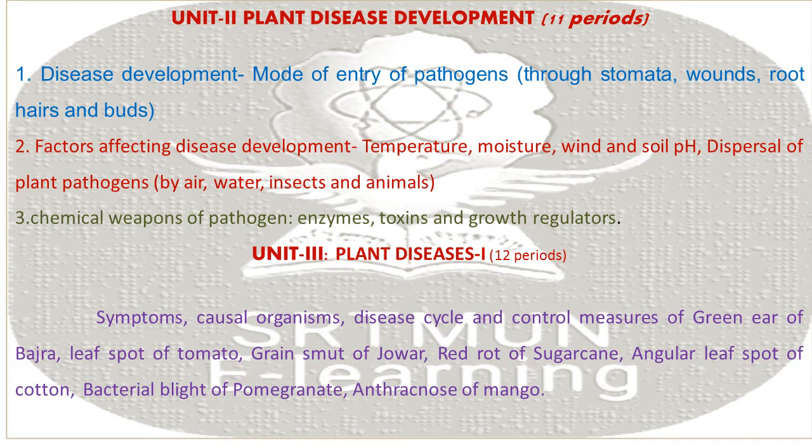Unit Second: Plant Disease Development. Subunit 1: Disease development, method of entry of pathogen through stomata, wounds, root hair, and bark. Factors affecting disease development: temperature, moisture, rain, and soil pH. Dispersal of plant pathogens by air, water, insects, and animals. Chemical weapons of pathogen: enzymes, toxins, and growth regulators.